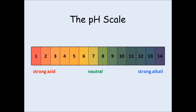Neutral solutions are given the pH of 7. If you go below 7, progressively from 6 to 1, you're getting more acidic. Whereas if you go above 7, from 8 to 14, you're getting progressively more alkaline.